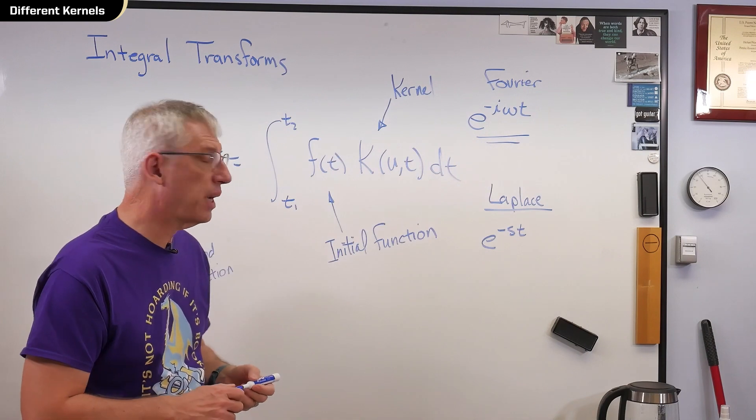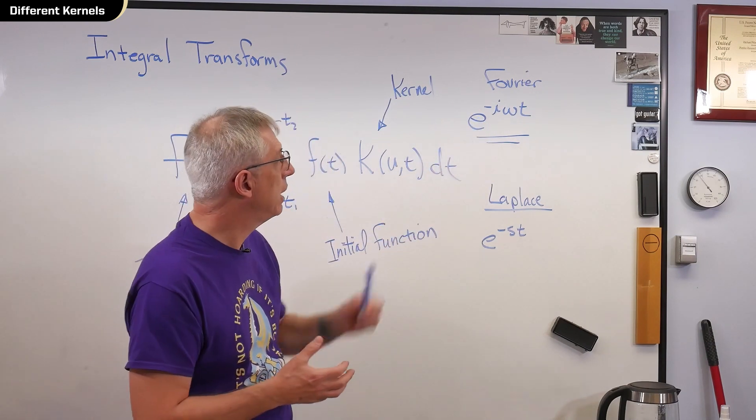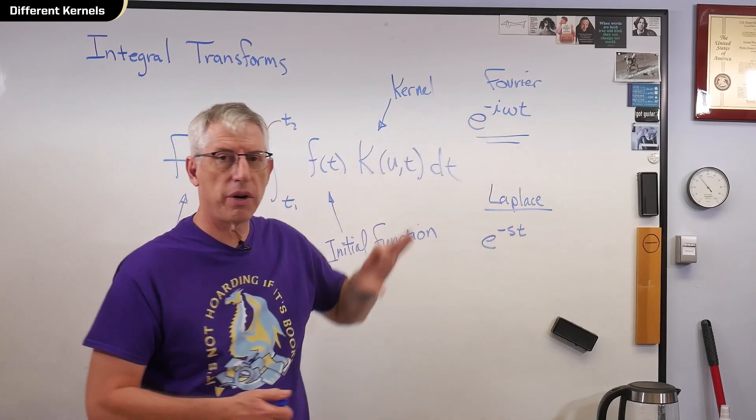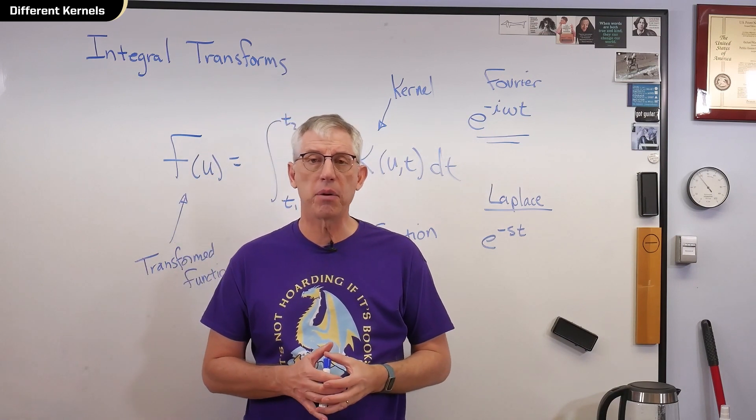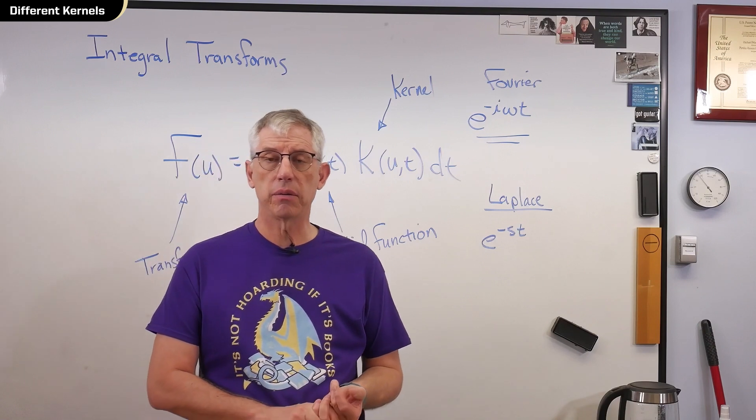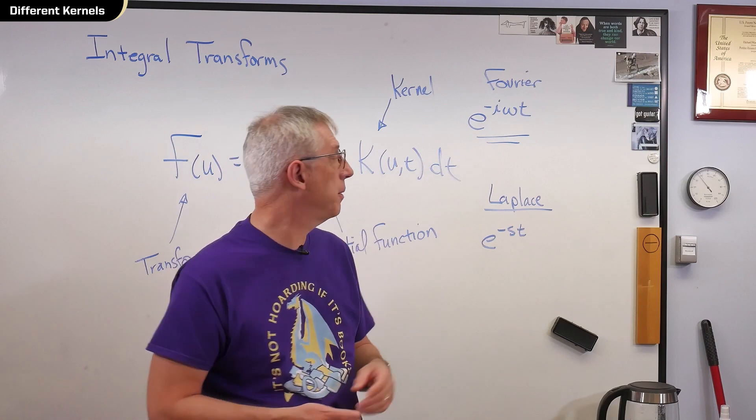What's s? s equals sigma plus i omega. It's closely related to a Fourier transform. Now, I said we use these all the time. What do you use them for? Well, Fourier transforms, in my experience, I've used them for transforming time domain data that's from acoustics or structural vibration measurements, transforming them into frequency domains so we can look at them and analyze them.